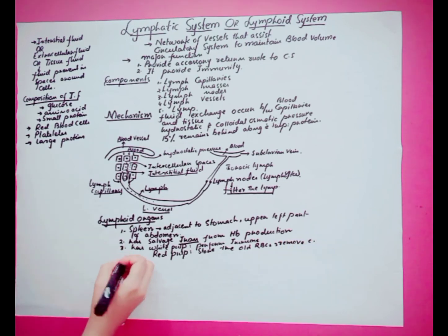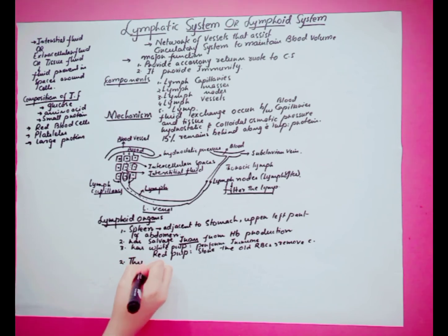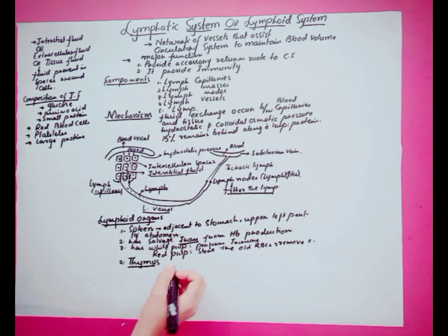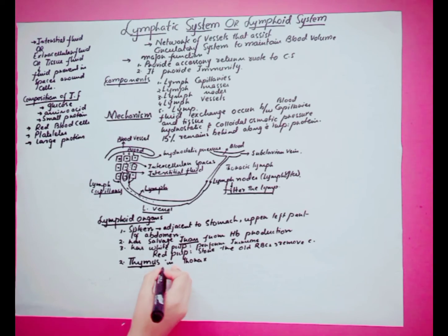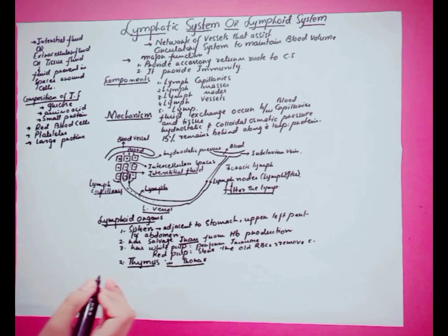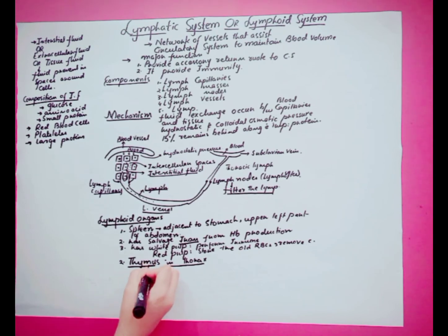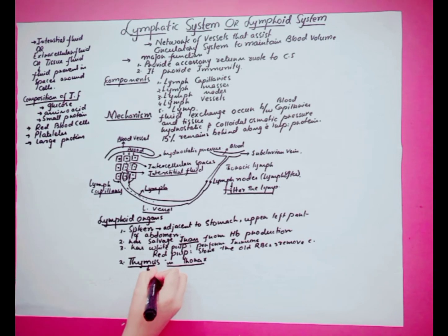The second lymphoid organ is the thymus. The thymus is present in the thorax and is more active in newborns as compared to adults. This gland is important for the maturation of lymphocytes.